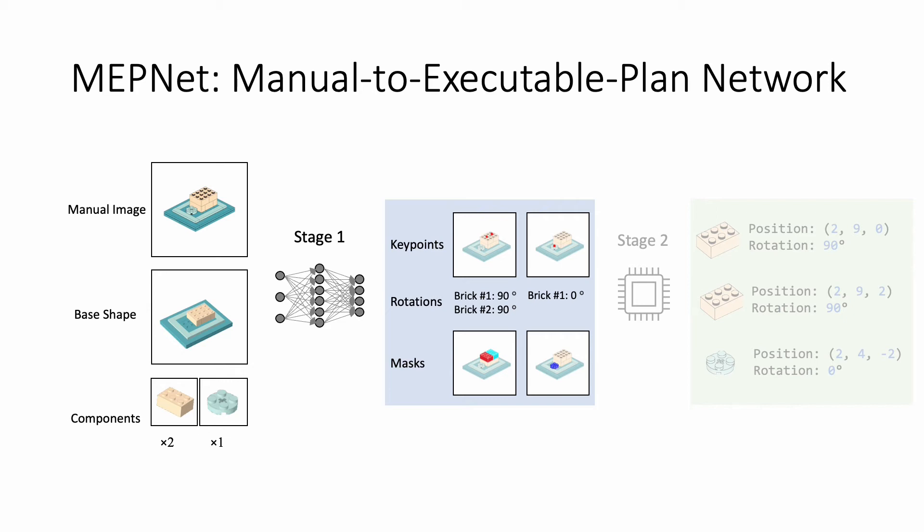Given the target manual image, the base shape, and the candidate components, MEPNet first uses a neural network to predict 2D key points, rotations, and the masks for each added component. In the second stage, it uses deterministic algorithms to infer the 3D pose of new components by fusing the prediction from the first stage. This is primarily motivated by the difficulty of directly estimating 3D poses from 2D images, which requires accurate inference of the depth information.